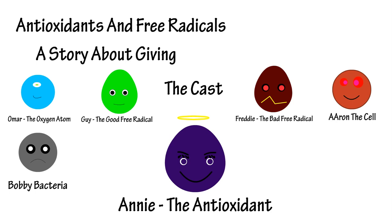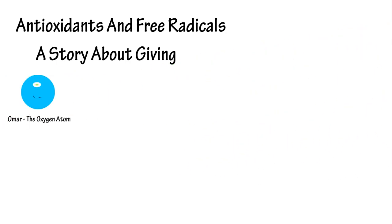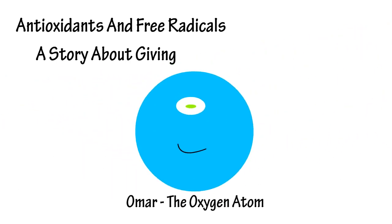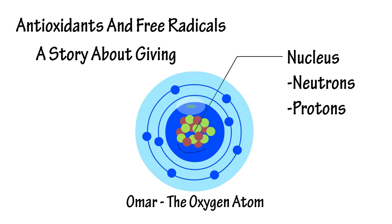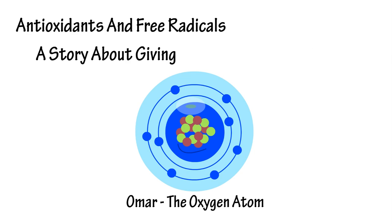Alright, clear the stage — accept Omar, you step forward. So we're going to go through a quick review of basic atomic structure. Omar, I need you to go transparent so they can see your insides. In the inner part of an atom is the nucleus, which contains neutrons and protons. The two orbits around the nucleus contain electrons. The main thing to remember is electrons — we're going to deal with them later.